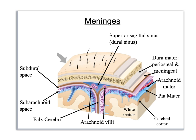The previous slide has the notes for meninges, and now we're just going to look at the drawing. I've got skin and hair here, then fascia and muscle, then the bone — a cortical layer, a diploe layer, and another cortical layer. Right here is the dura mater. I'm going to divide that into periosteal and meningeal layers. The periosteal layer is right up against the bone and the meningeal layer is right up against the other meninges.